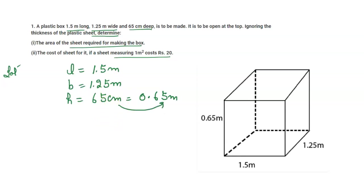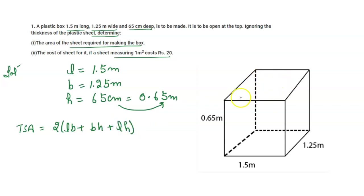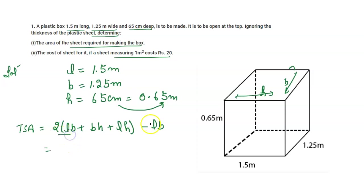Now, the formula for the area: the total surface area of a cuboid is equal to 2 into (LB + BH + LH). Since the top is open, the top face has area LB, so we subtract one LB. That gives us: 2(BH + LH) + LB.